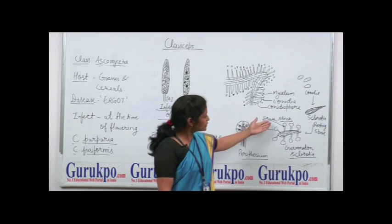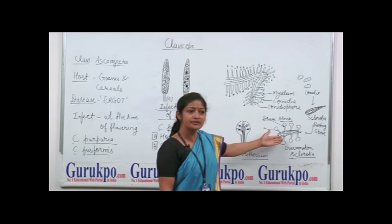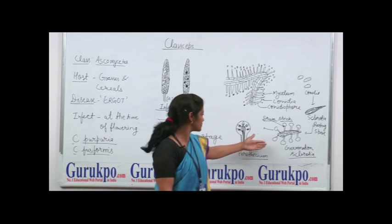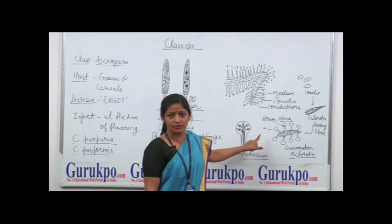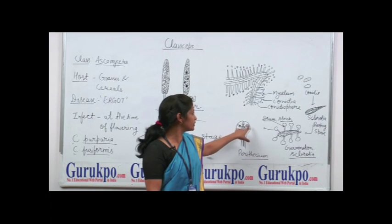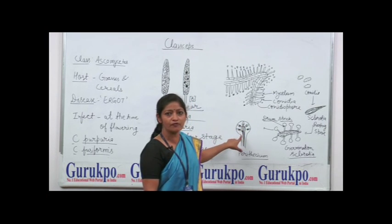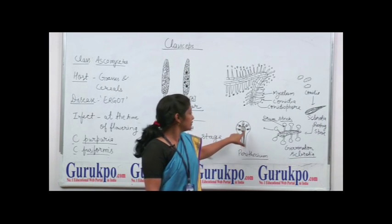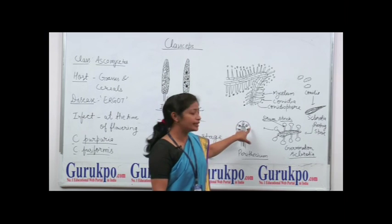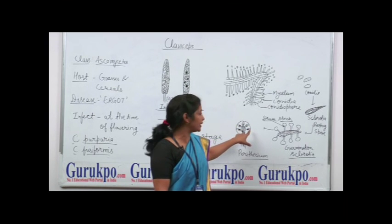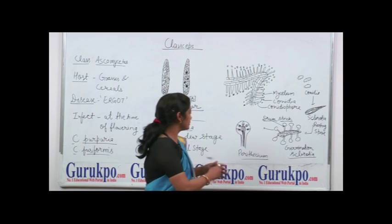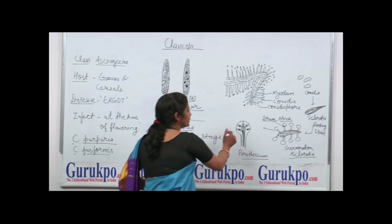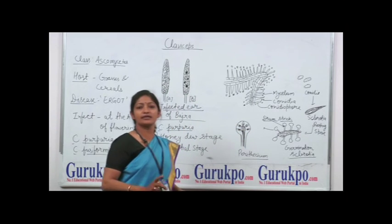If we cut the section of these drumstick-like structures, we see cup-shaped structures. This is called the fruiting body of the fungus. These fruiting bodies contain asci, and each ascus contains ascospores.